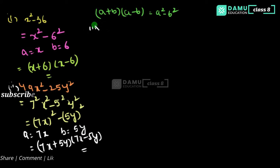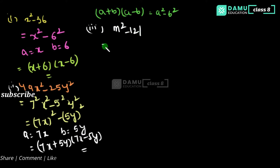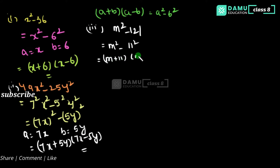Next, the third one is m squared minus 121. You can write it in the format of m squared minus 11 squared. Obviously it is a squared minus b squared, and the factorization is m plus 11 into m minus 11.